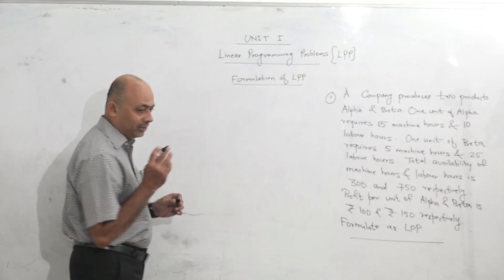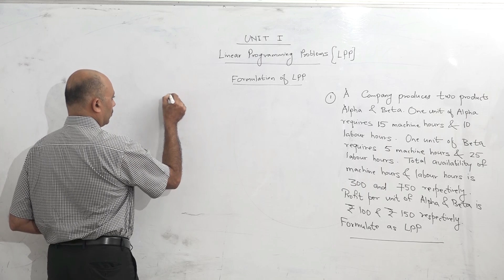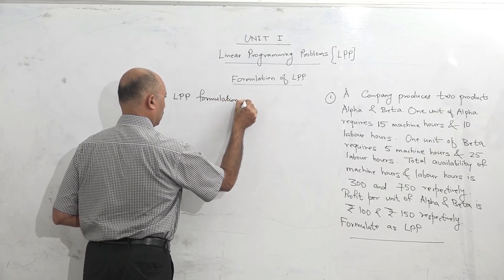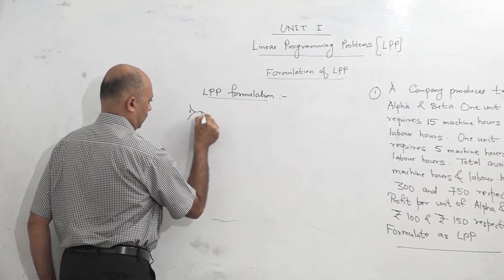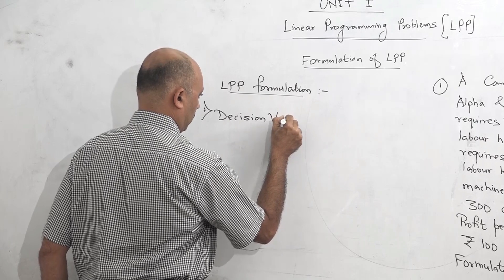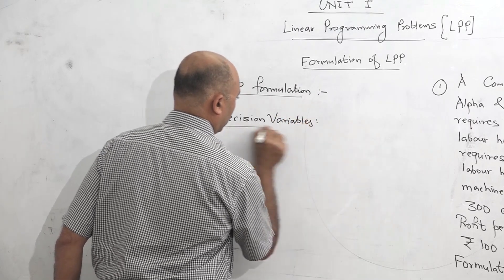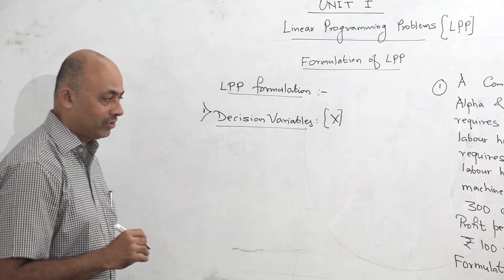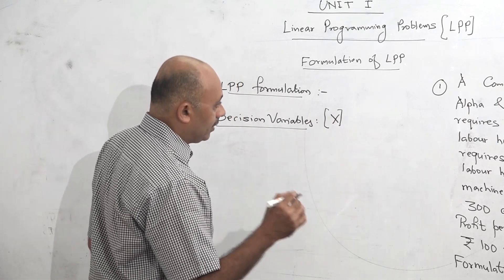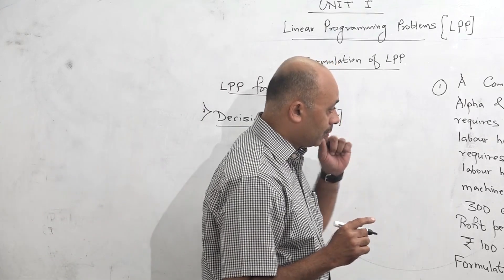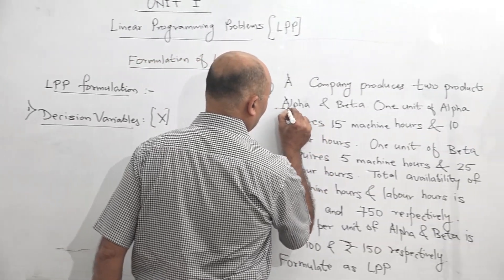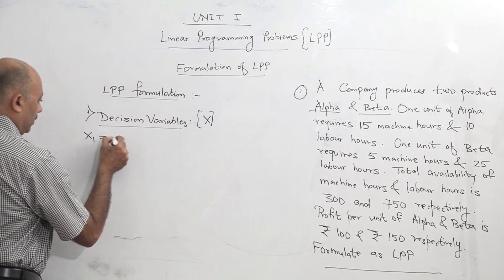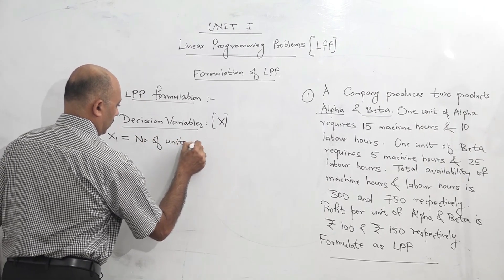The format of LPP contains three components. The first component is called decision variables. Decision variables are represented by x1, x2, etc. The decision variables are generally the products given in the question. Here there are two products: alpha and beta. So our variables are alpha and beta. We will say x1 is equal to number of units of alpha.